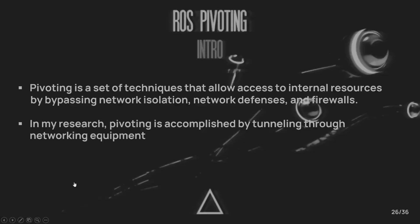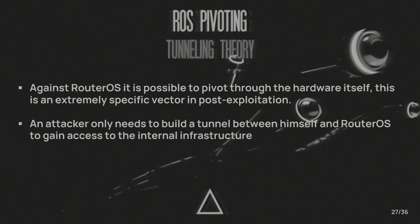This is the impact of this very specific vector. RouterOS pivoting is a set of techniques that allow reaching external resources by bypassing network isolation, network defenses, and firewalls. Pivoting allows the attacker to expand their presence in the network — it can be achieved through proxying, tunneling, and various other means.